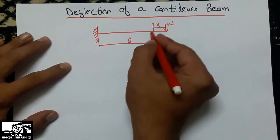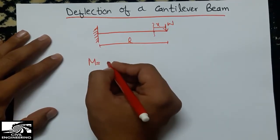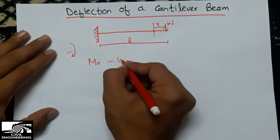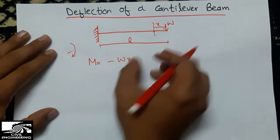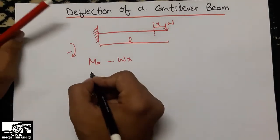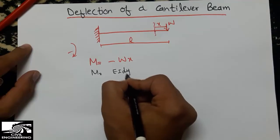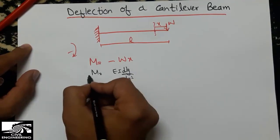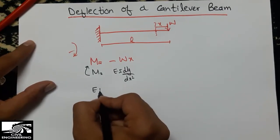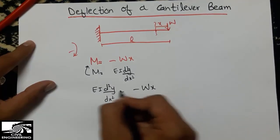The moment at distance x from the right support will be equal to M, and since it is clockwise it will be negative: M equals minus W times x. As we know, the moment is given by EI times d²y/dx². So putting this in place of M, we get EI times d²y/dx² equals minus W times x.